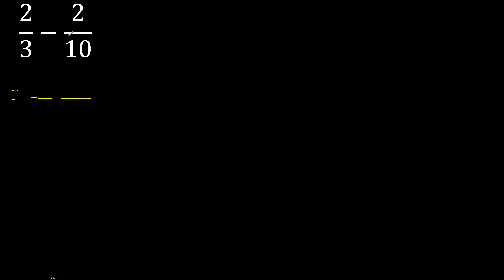First, multiply like this, then multiply by 2: 20, minus 3, multiply by 2: 6.